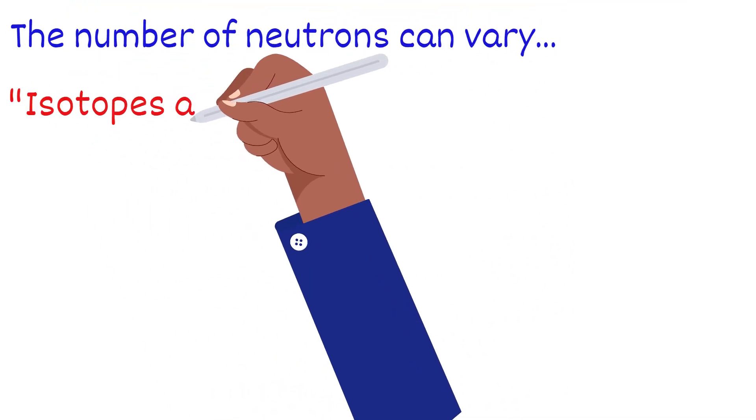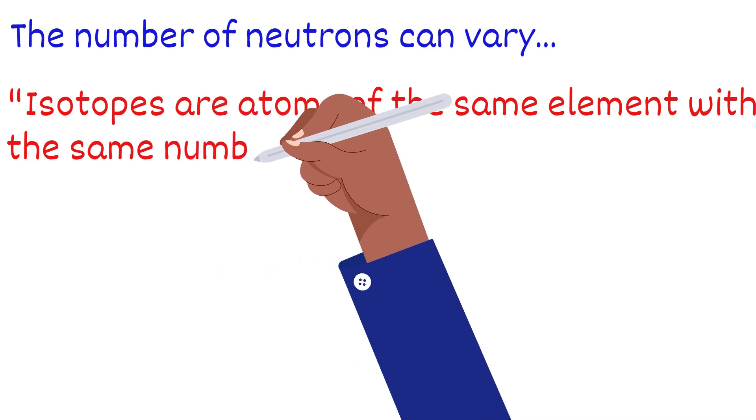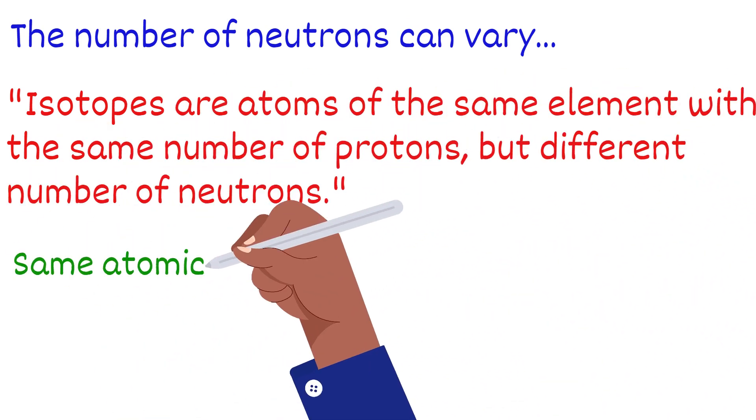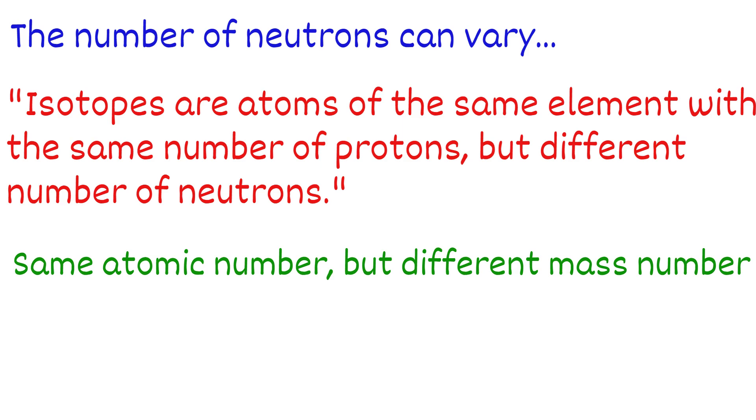Next, the number of neutrons in an atom can vary slightly. Isotopes are atoms of the same element which have the same number of protons but different neutrons. In other words, the same atomic number but different mass numbers.